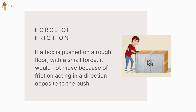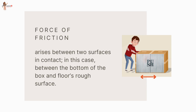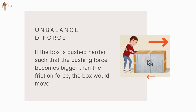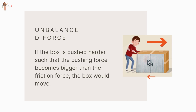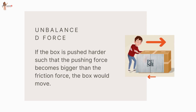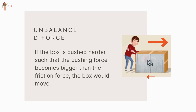What happens when children try to push a box on a rough floor? If they push with a small force, the box does not move because of friction acting opposite to the push. The friction force arises between two surfaces in contact — in this case, between the bottom of the box and the floor's rough surface. It balances the pushing force, so the box does not move. If the box is pushed harder such that the pushing force becomes bigger than the friction force, the box would move — there is an unbalanced force.